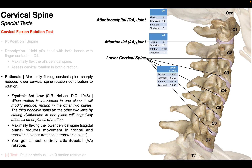That's where Freyette's third law comes into play. If we maximally flex the cervical spine, we're going to sharply reduce the contribution to rotation by the lower cervical spine, and we'll be looking solely at the rotation provided by the atlanoaxial joint. Now, Freyette did not actually come up with this particular law — he came up with his first two. This was actually created by a D.O., C.R. Nelson, in 1948. Basically what he said is that when motion is introduced in one plane, it will modify — or in other words, reduce — motion in the other two planes.